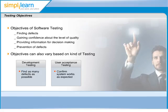User acceptance testing has an objective of confirming if the system works as expected by the end-users of the system. This is the final stage of testing before we deploy the code to production. Maintenance testing objective is to ensure that no new defects have been introduced, especially in case of enhancements and/or defect fixes.